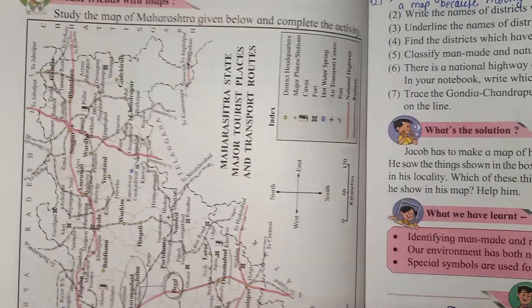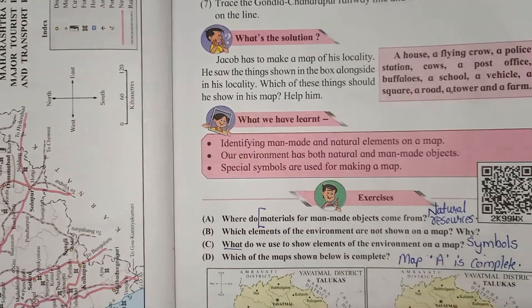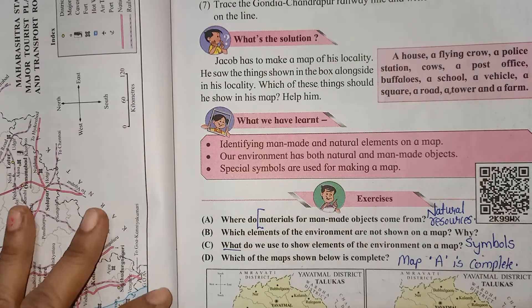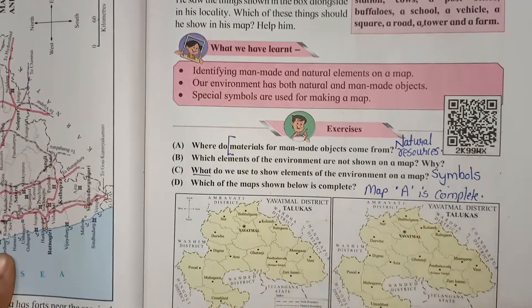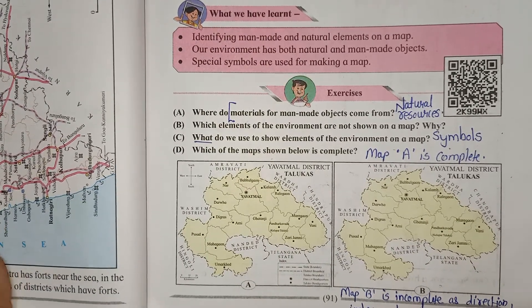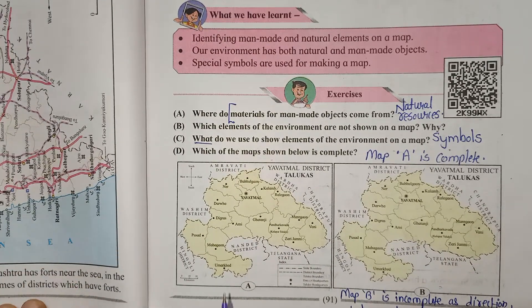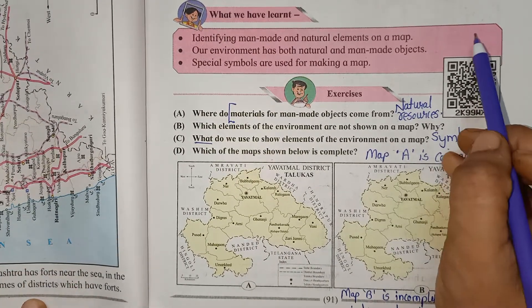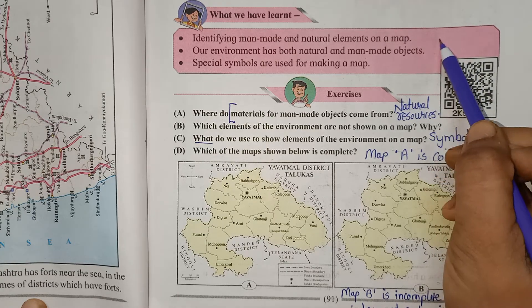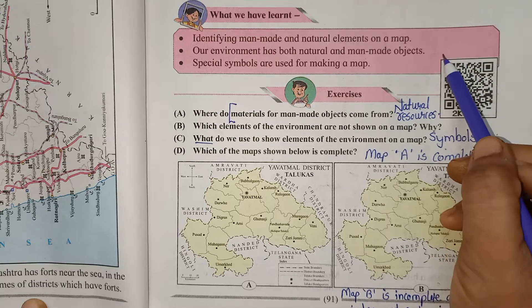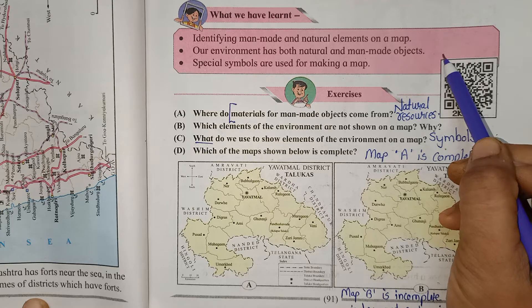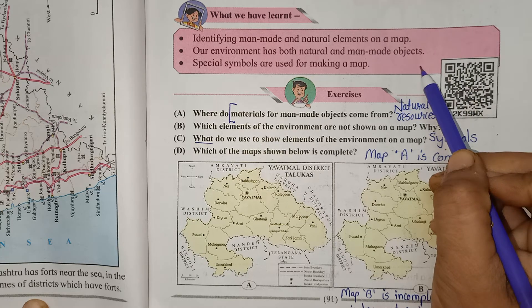In this chapter we will see all points that we have learned, and then exercise question answers. First point: identifying man-made and natural elements on a map. Second, our environment has both natural and man-made objects. Third, special symbols are used for making a map.